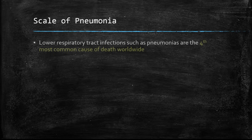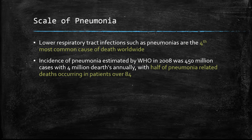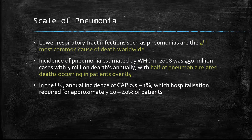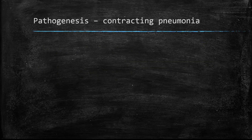The scale of pneumonia: lower respiratory tract infections as a whole are the fourth most common cause of death worldwide. Half of pneumonia-related deaths occur in patients over 64, making it a big killer in the elderly. In the UK, the annual incidence is between 0.5 to 1% of the population, and hospitalisation is required in up to 40% of patients.